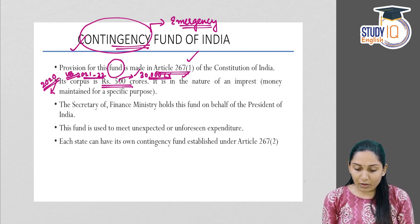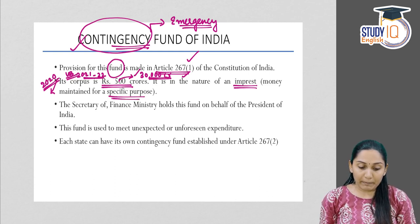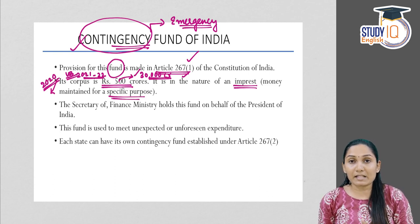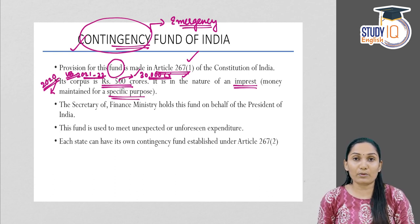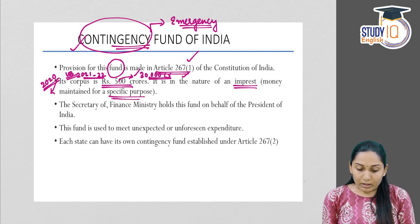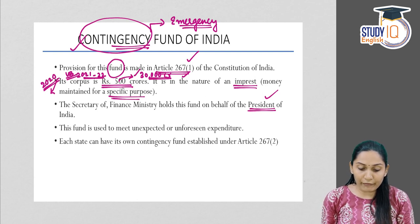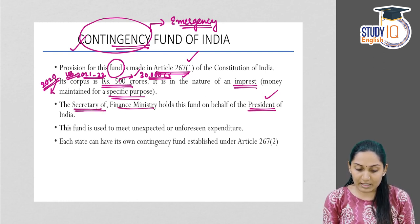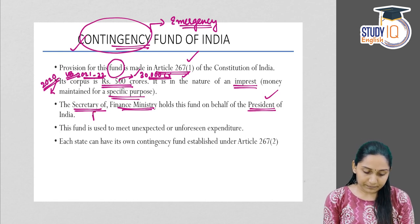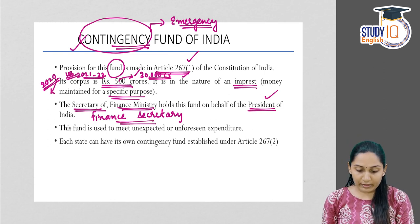The Contingency Fund is in the nature of an imprest — that is, money earmarked for a specific purpose — which is to meet emergency or contingency situations arising in the country. The President is the custodian of this fund, meaning it is at the disposal of the President. On behalf of the President, the Finance Secretary holds the fund.